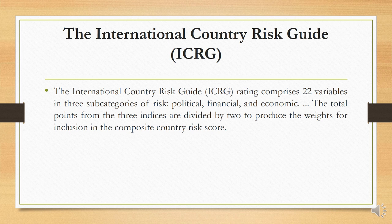The International Country Risk Guide (ICRG) rating comprises 22 variables in three subcategories of risk: political, financial, and economic. The total points from the three indices are divided by two to produce the weights for inclusion in the composite country risk score.